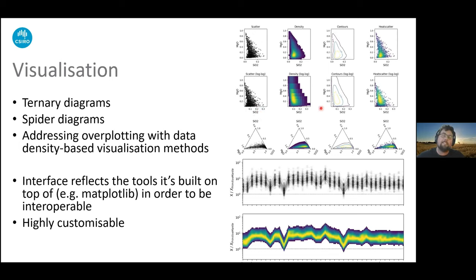Whether it be visualizing data density, this is kind of density estimation, looking at things in contours, which is really good if you want to display this behind another data set you want to look at, or even the heat scatter diagrams, which is kind of the best of both worlds between scatter and density diagrams. The interface for these, like transforming geochemical data, really reflects the tools it's built on top of in order to be interoperable. Pyrolite is designed to play nicely with other tools so you can mix and match where you want to.